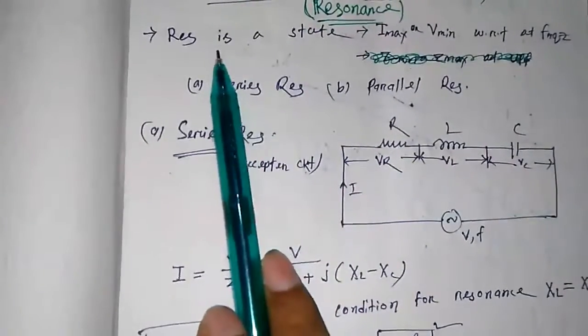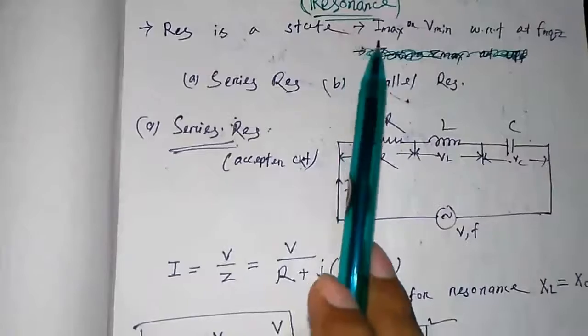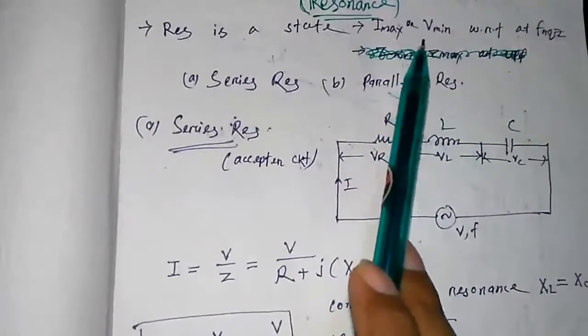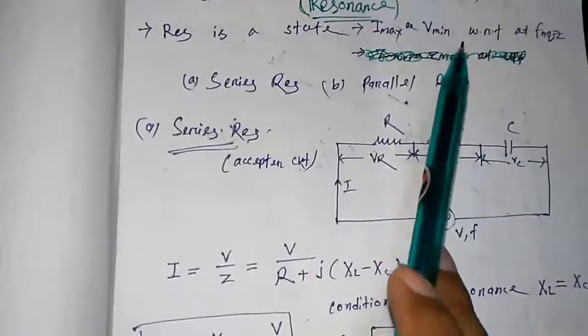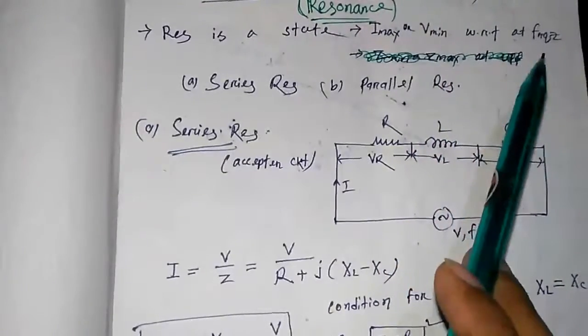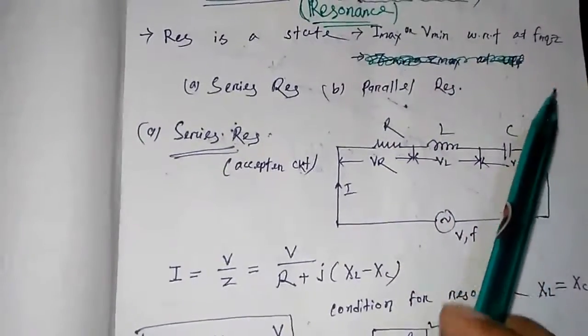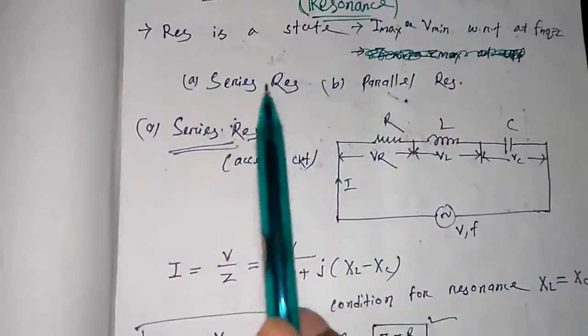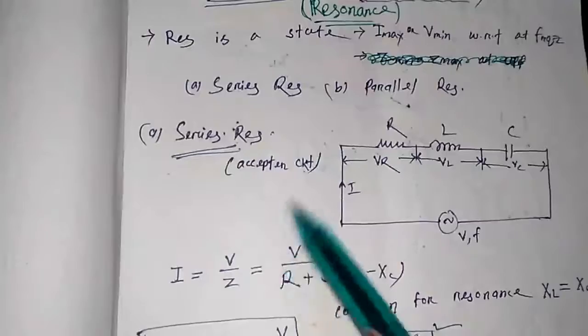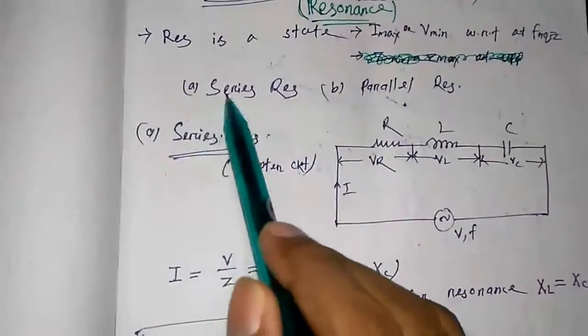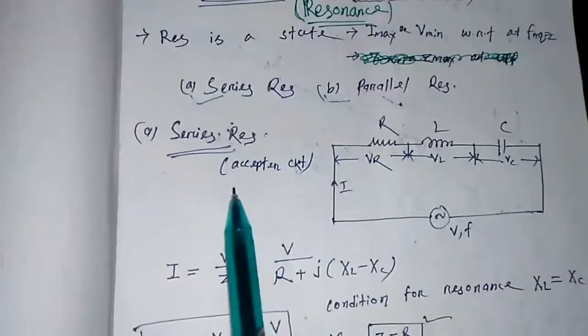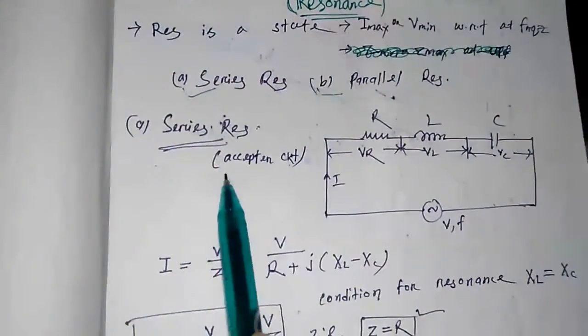Resonance is a state where the current is maximum or the voltage is minimum with respect to a certain frequency. As per the circuit, this is of two types: series resonance and parallel resonance. So coming to the series resonance circuit.